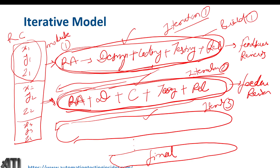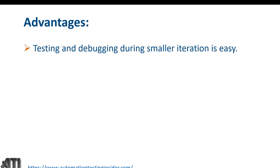The iterative model works best for projects that have multiple modules. Now let's talk about the advantages and disadvantages. First advantage: testing and debugging during smaller iterations is easy, because we have divided the project into different modules.